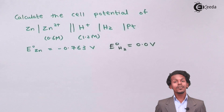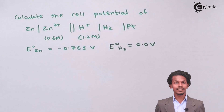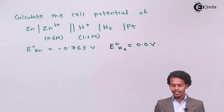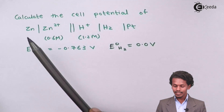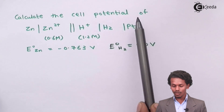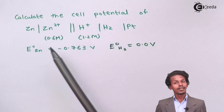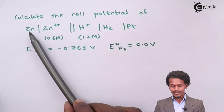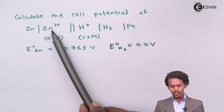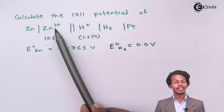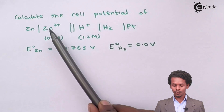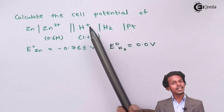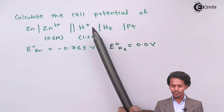Our question is a numerical based on the Nernst equation. We have to calculate the cell potential of the cell in which Zn is converted into Zn²⁺, where the concentration of Zn²⁺ is 0.6 molar, and a hydrogen electrode is also used.